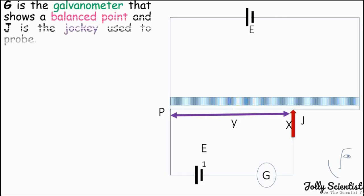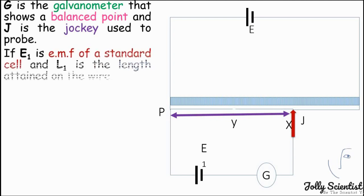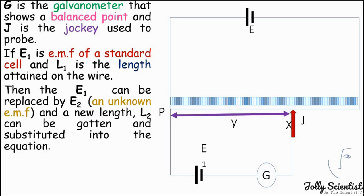The potentiometer is useful in measuring the EMF of an unknown cell. From the diagram, G is the galvanometer that shows the balance point and J is the jockey. If E1 is the EMF of the standard cell and L1 is the balance length, then E1 can be replaced by E2, an unknown EMF, and a new length L2 substituted into the equation E1 divided by E2 equals L1 divided by L2.